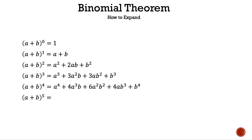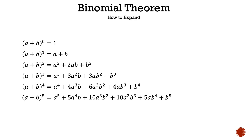Let's move on to the last one we're going to expand because it keeps getting harder to say. The quantity of a plus b raised to the power of 5. Using the binomial theorem, the expansion is a to the fifth power plus 5a to the fourth power b plus 10a cubed b squared plus 10a squared b cubed plus 5ab to the fourth power plus b to the fifth power. Woohoo! That was hard to say. Believe it or not, there are a few patterns in all this madness.